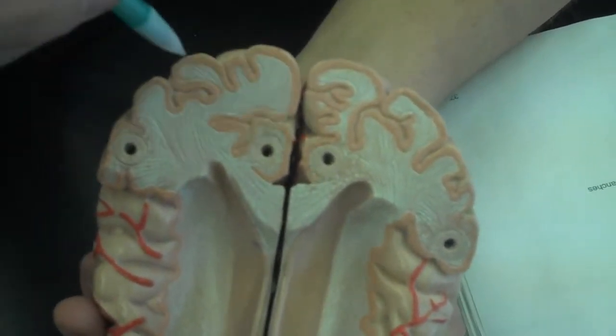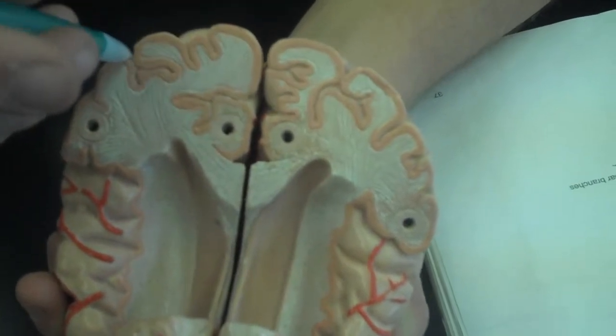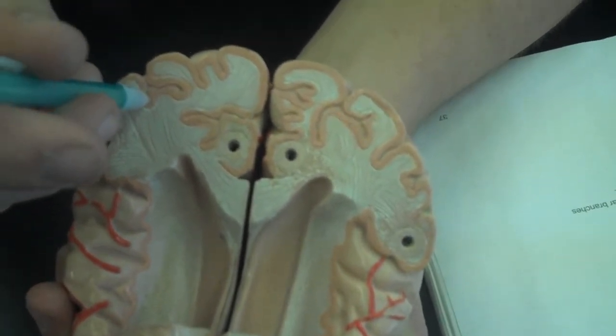Then you have the gyri, which are the ridges, the sulci, which are the indents. And that's about it for the coronal section.